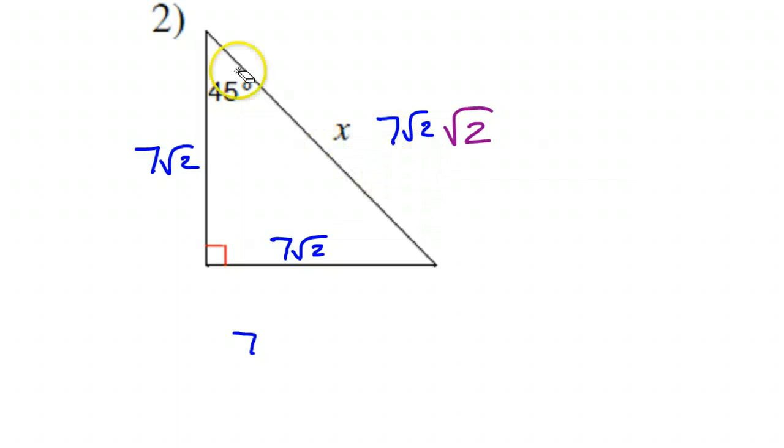If you can understand that, then you're home free. We know that multiplying a radical by itself just gives you the number out. So radical 2 times radical 2 is just 2. Bring down that 7. So I've got 7 times 2, so that's 14. So that's it. This side must be 14. X is 14. That's it for problem number 2.